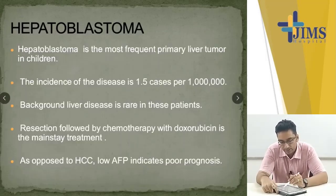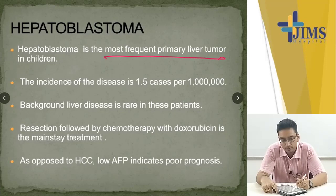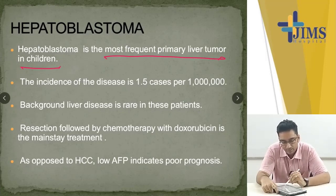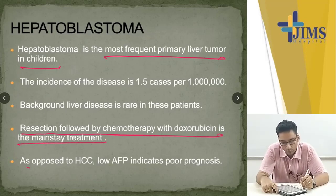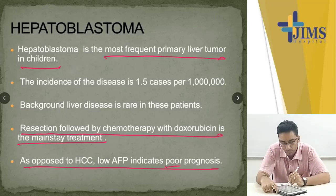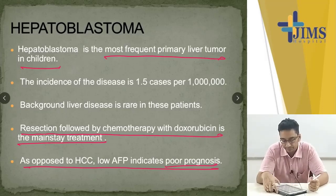Hepatoblastoma is the most frequent primary liver tumor in children. Resection followed by chemotherapy with doxorubicin is the mainstay treatment. Low AFP indicates poor prognosis.